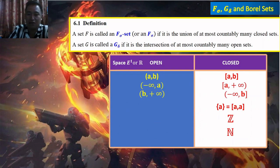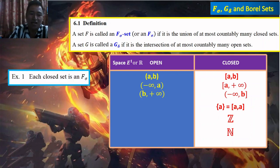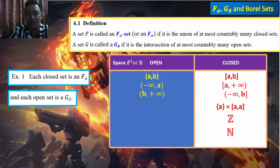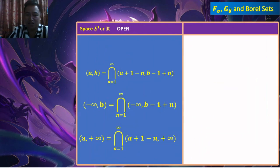Based on our example from our first video with our space E1 (the set of real numbers): the three sets in yellow are the open sets and the closed sets are on the right side. Example number one: each closed set is an F-sigma, and each open set is a G-delta. So in the space E1, open sets are G-delta and closed sets are F-sigma.